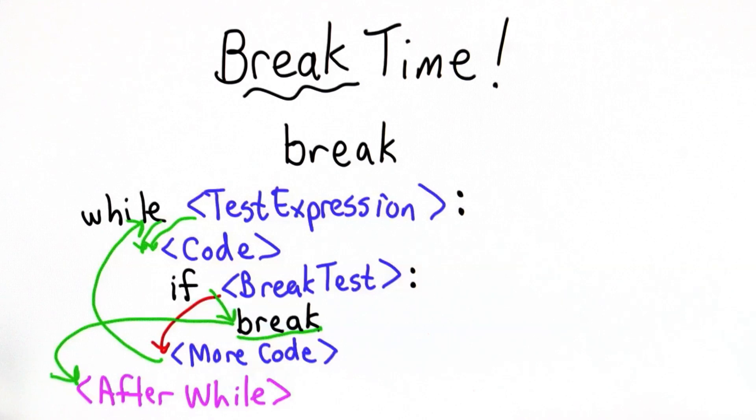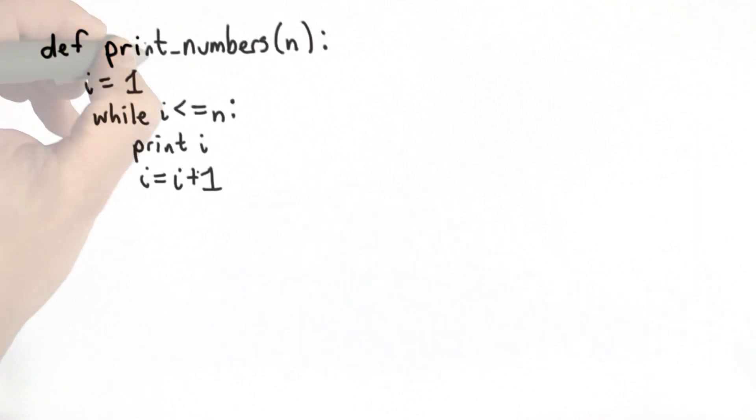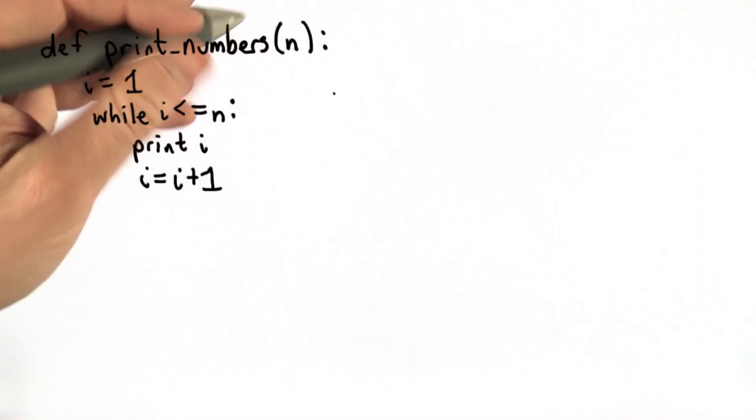Here's an example of how we might use that. So before we defined the procedure print_numbers without using break, we defined it like this. So this is the code we had before. We could rewrite that using break.